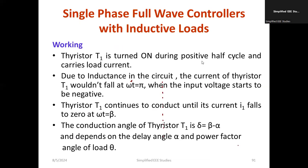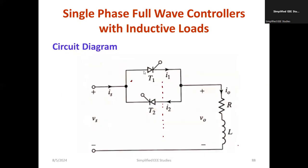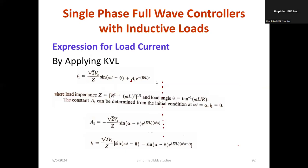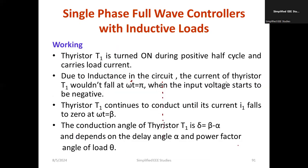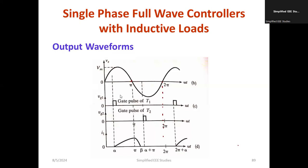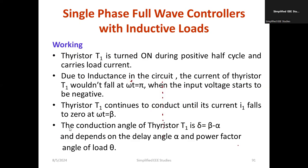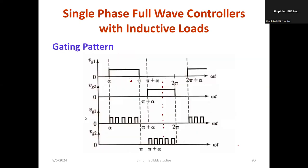T1 is turned on during the positive half cycle and carries the load current. Due to the inductance in the circuit, the current of thyristor T1 would not fall at omega-t equal to pi when the input voltage starts going negative. Thyristor T1 continues to conduct until I1 falls to zero at omega-t equal to beta. The conduction angle of thyristor T1 is delta, equal to beta minus alpha.